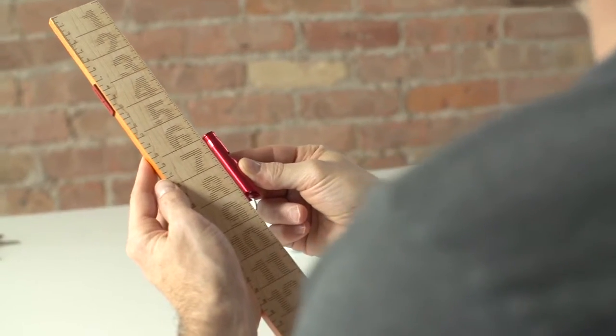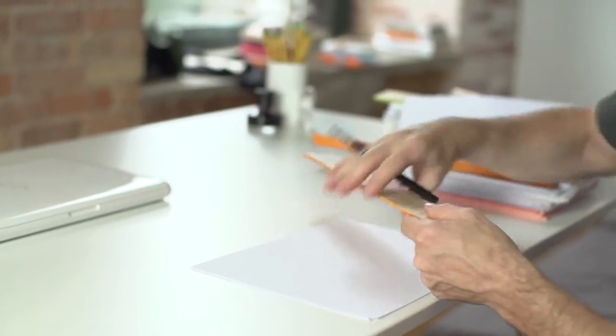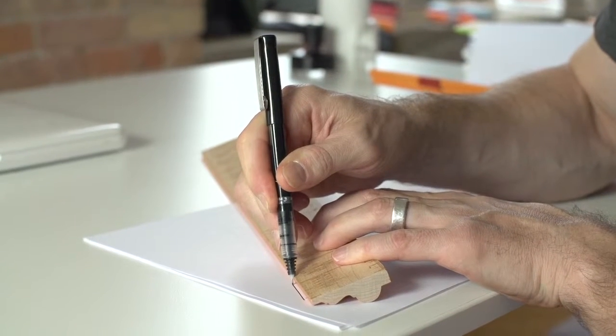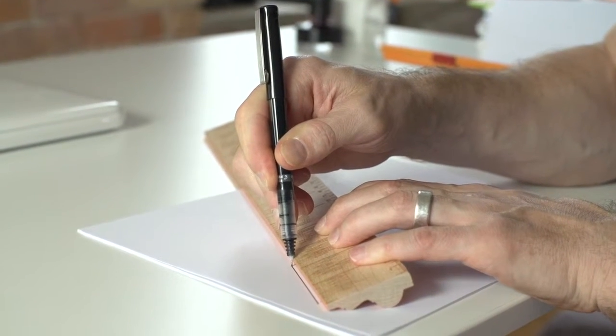When using it as a ruler, the raised side makes it easier to grasp and maneuver. When drawing lines, the sloped plane creates a recessed edge that naturally prevents ink from being pulled underneath and smearing the paper.